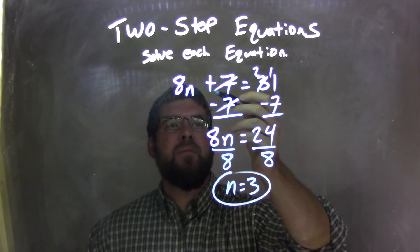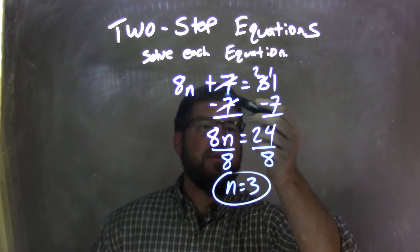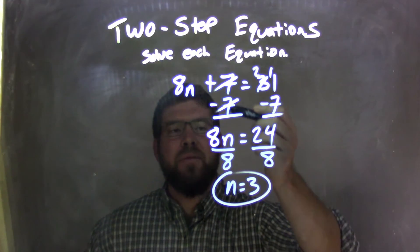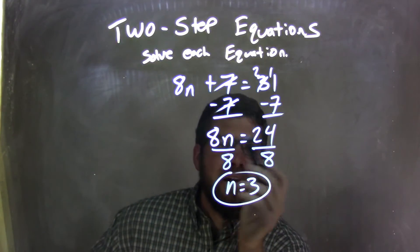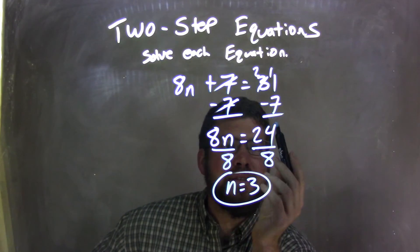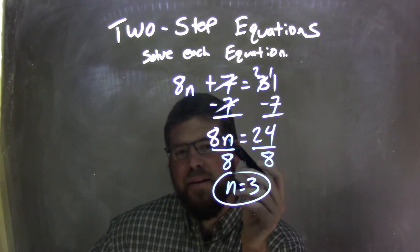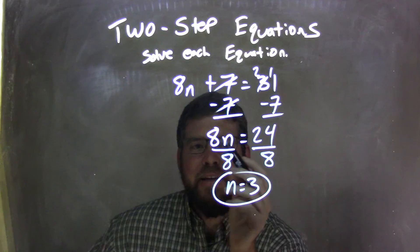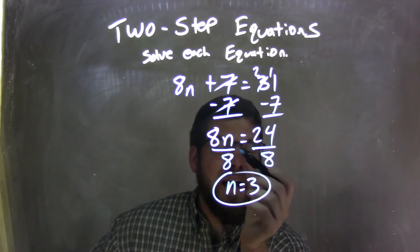So, let's recap. We started with 8n plus 7 equals 31. I subtracted 7 from both sides because that was the opposite addition. I brought down the 8n, and I got 8n equals 31 minus 7, which is 24. And then divided by 8 to both sides because 8 times n, the opposite operation of that, is division.